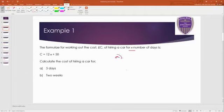Let's do these questions separately then. For part a, we're being told that it's five days, which means n equals five. We just need to remember that 12n means 12 times by n. So if n is five, then we're doing 12 times by five, and then add in 50 on at the end. So 12 times five is 60. 60 plus 50 means that the cost is 110 pounds.